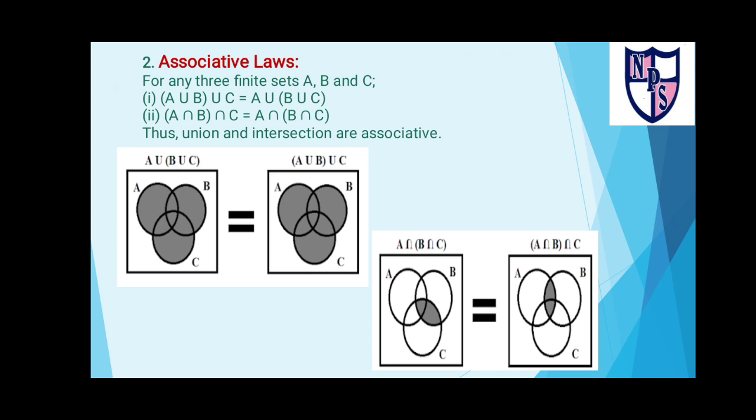Second law is the associative law. It defines that how the sets are grouped does not change the result. Means if you have three sets A, B, and C, it does not matter if you first do the union of A and B then C, or union of B and C then A. Similarly for intersection.